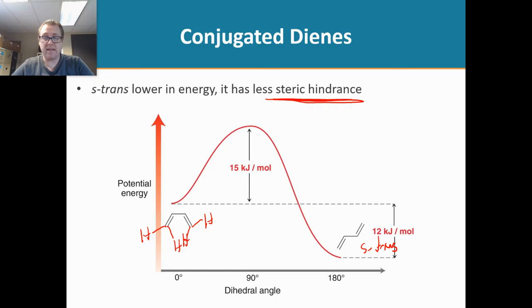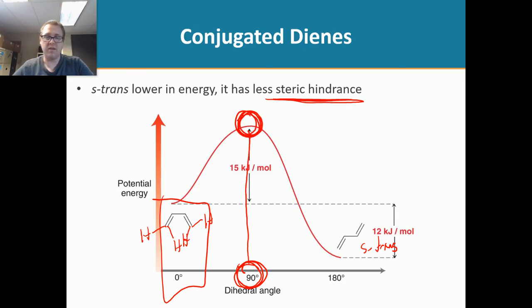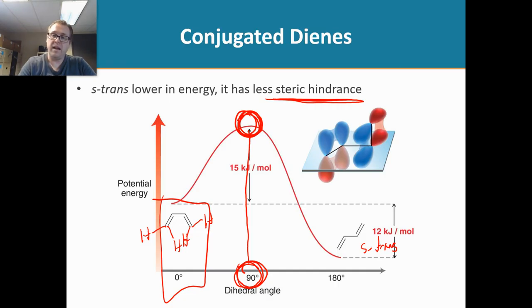Now I said that there's many conformers, because that's what we're showing on this x-axis. But the most important ones are the s-cis with a dihedral angle of 0 versus 180. Now there's this one right here at 90, which corresponds to the highest energy on this graph. Now that highest energy point is demonstrated here.